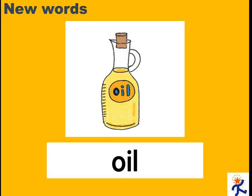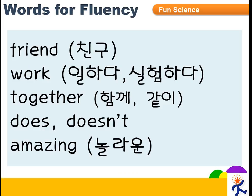Oil. When you pronounce this word first, 먼저 발음을 할 때 입술을 이렇게 동그랗게 모아서 시작을 해야 돼요. Oil. Then let's check the words for fluency.